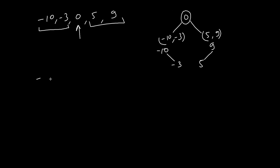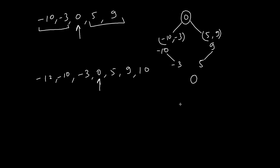Let's take another example. We have minus 12, minus 10, minus 3, 0, 5, 9, 10. Let's create a binary search tree out of this list — this is a list, not an array. The middle element is 0. So here is our middle element: the left subtree has minus 12, minus 10, and minus 3, and the right subtree has 5, 9, and 10.